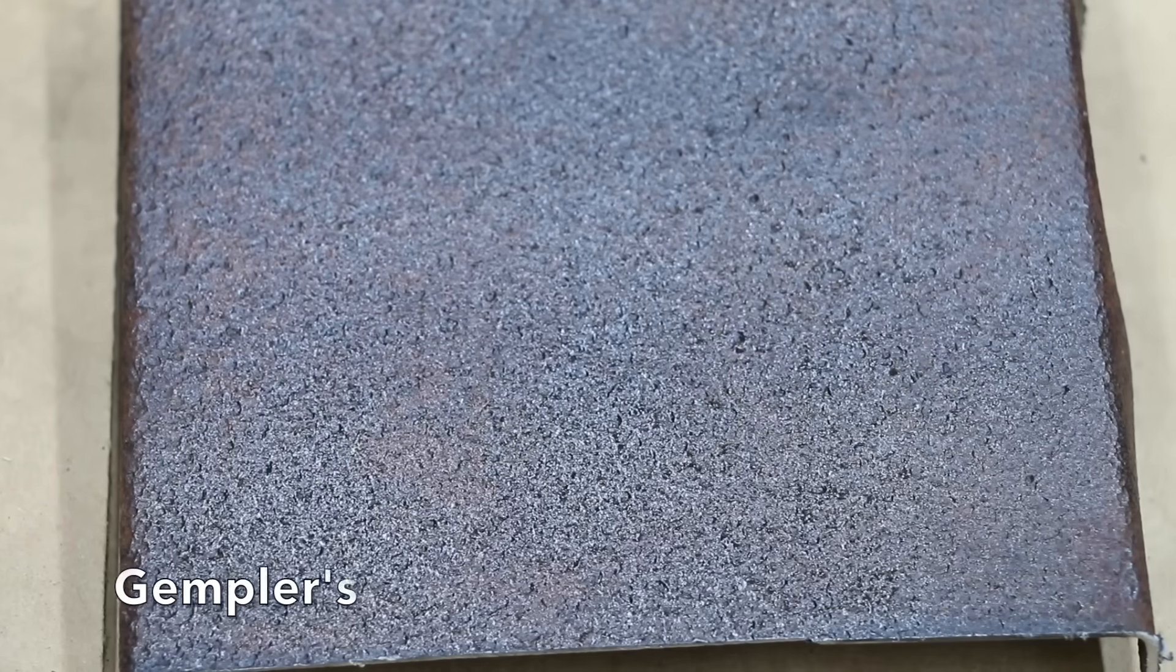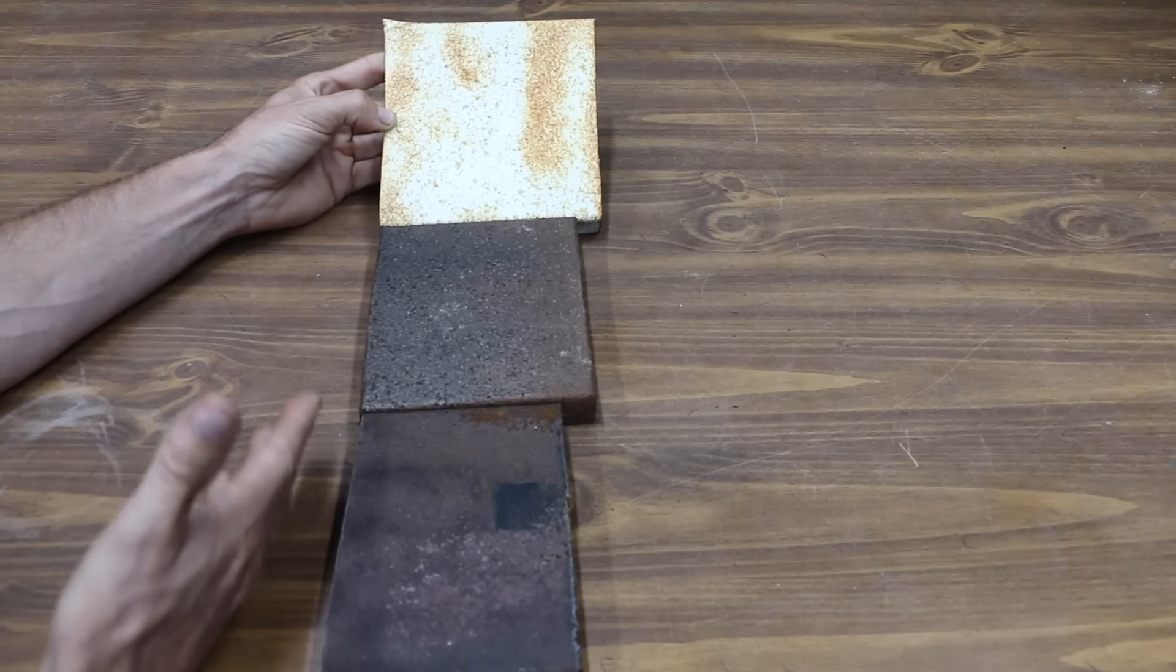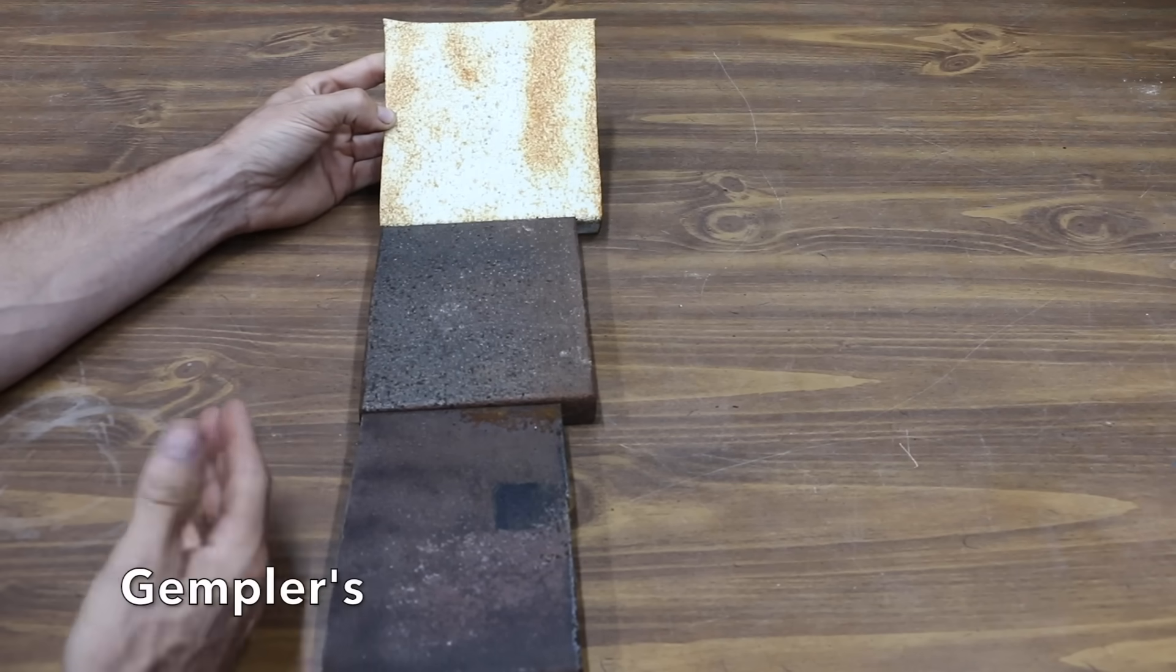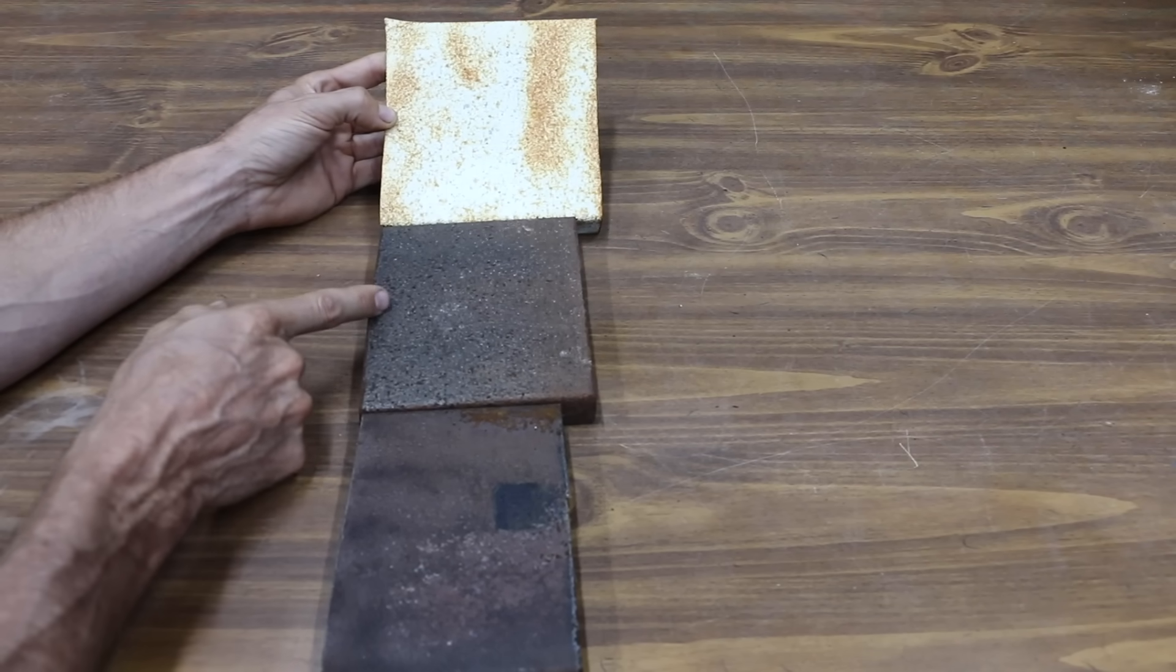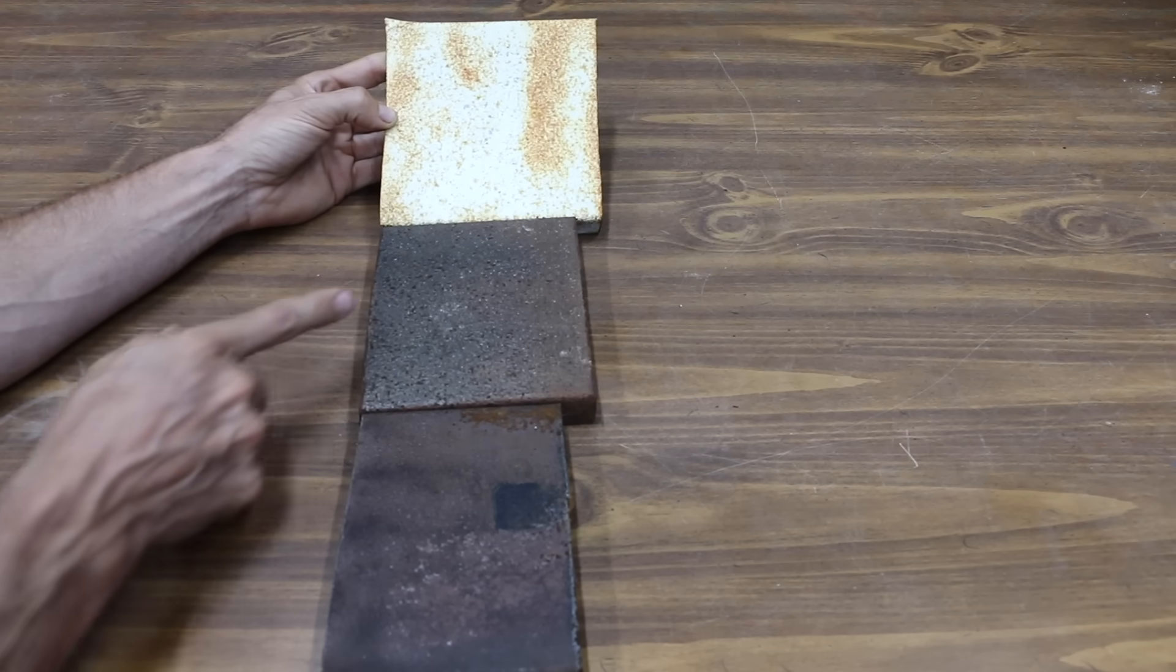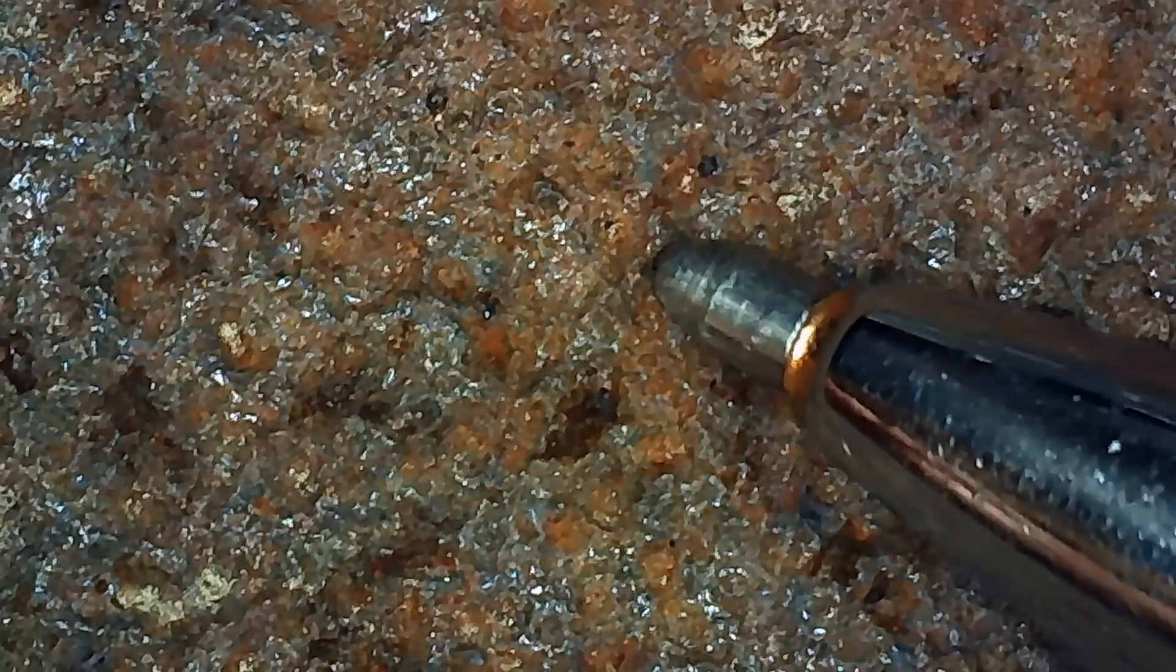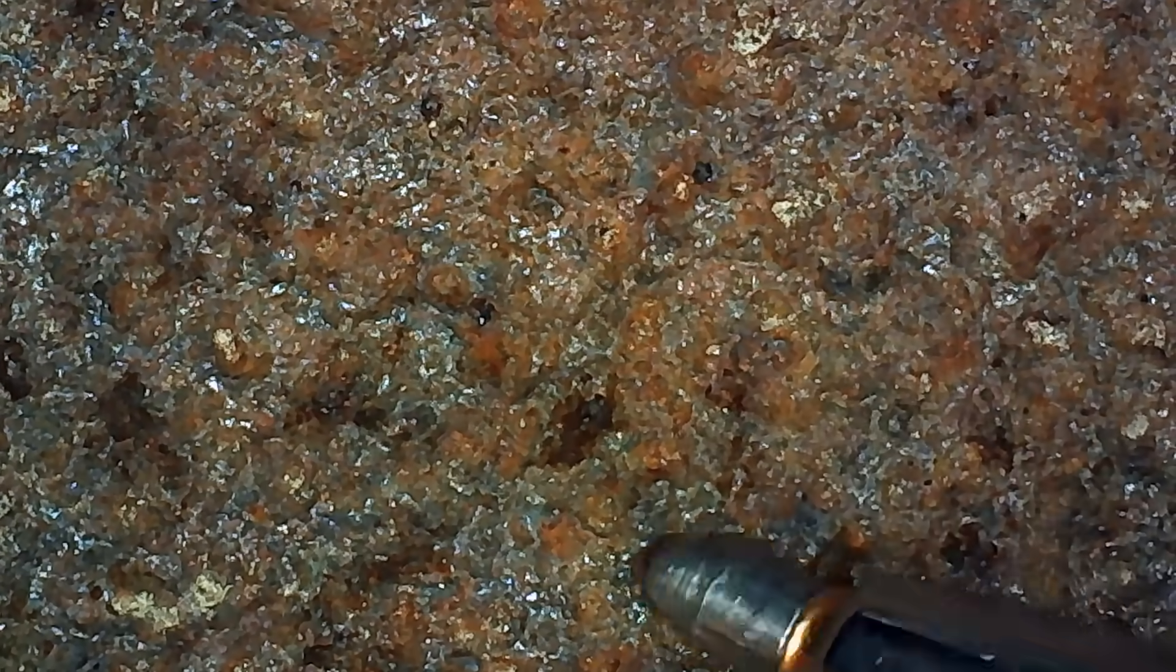The Gemplers provided a pretty nice finish before exposure to the elements. Finishing in eighth place is the Gemplers. Unfortunately, Gemplers experienced quite a bit of rust, especially on the two panels that experienced the hydrogen peroxide, vinegar, and salt exposure. And even the panel that did not experience the hydrogen peroxide, vinegar, and salt has quite a bit of rust on it.